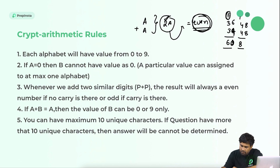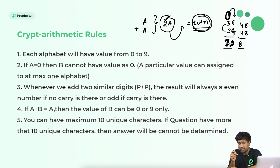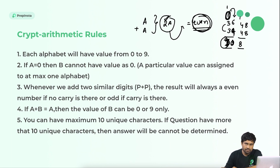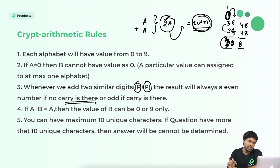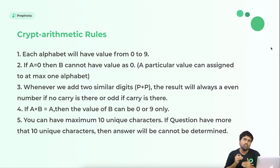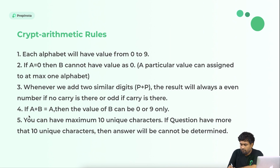For example, if you have 36 plus 36 or 48 plus 48: six plus six is 12, but if a preceding carry adds one, three plus three plus one equals seven — an odd number. So if you see two repeated alphabets summing to an odd digit, there is always a carry. If the sum is even, there is no carry.